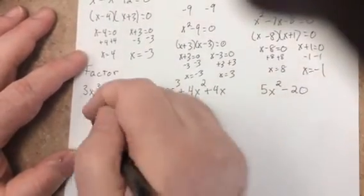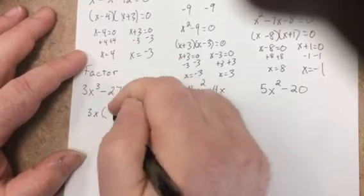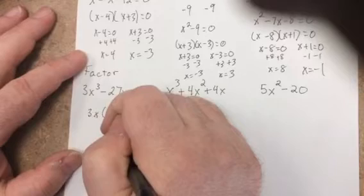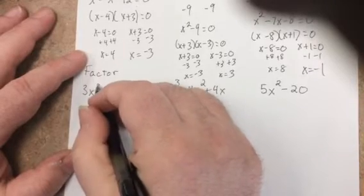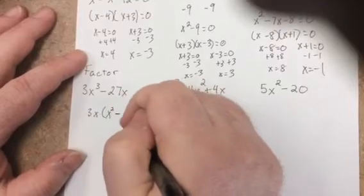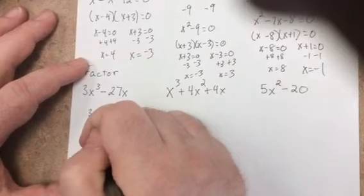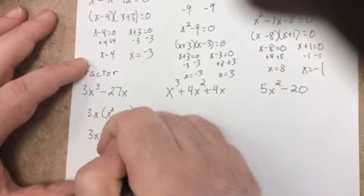Okay, so GCF is the first thing we look for. It'd be x squared because x times x squared is x cubed. Three times one is three, minus three times nine, and x times one is x. Then I can factor that—that's the difference of two squares.